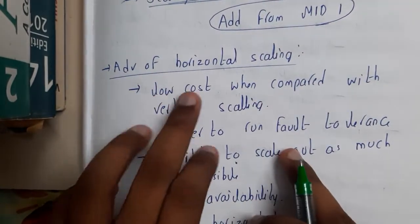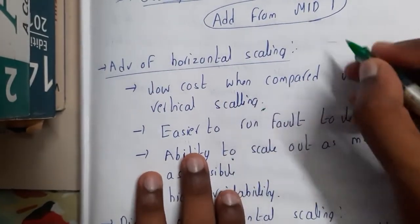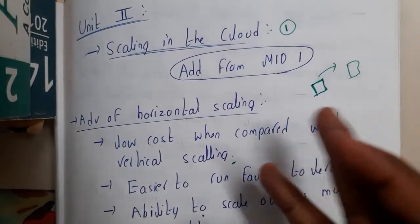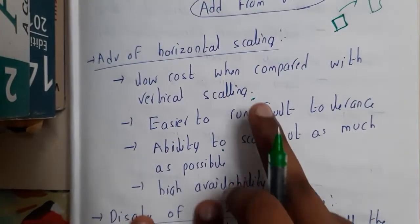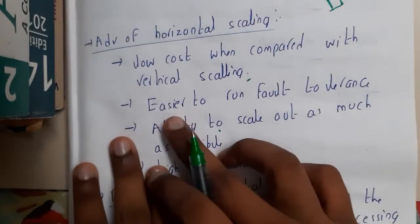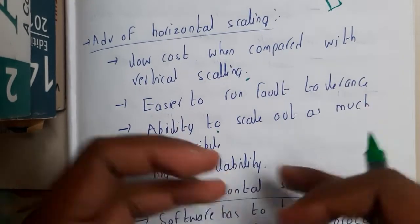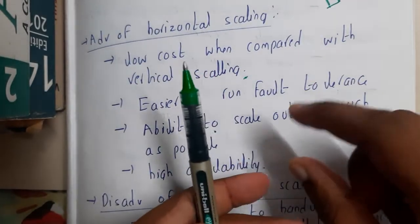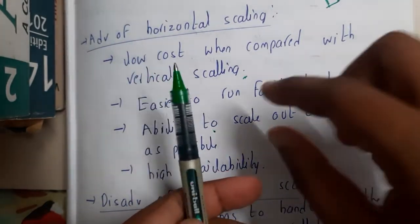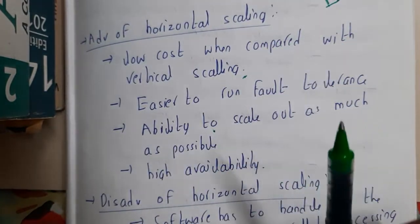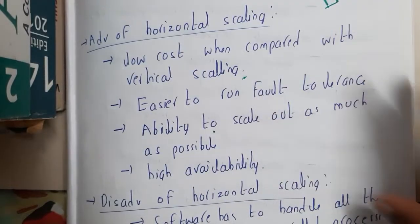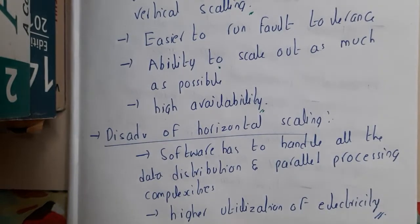The key difference: in horizontal scaling you keep the old system and add new components, whereas in vertical scaling you buy an entirely new system. The major advantage of horizontal scaling is low cost compared to vertical scaling, since you're not buying a whole new system. Other advantages include easier fault tolerance identification, ability to scale out incrementally — even adding just 1 GB storage — and high availability.